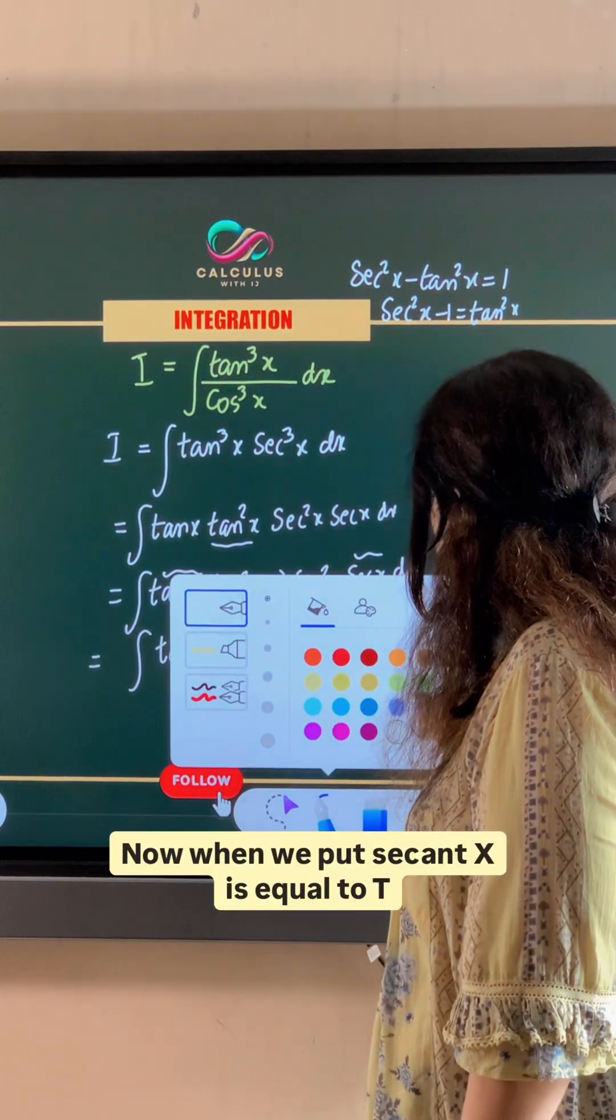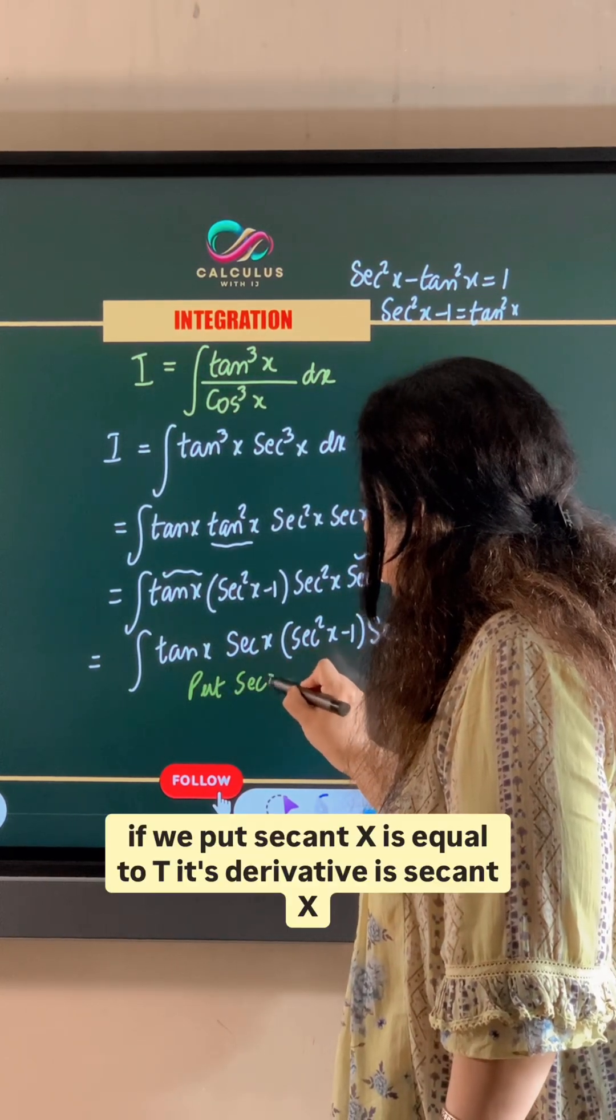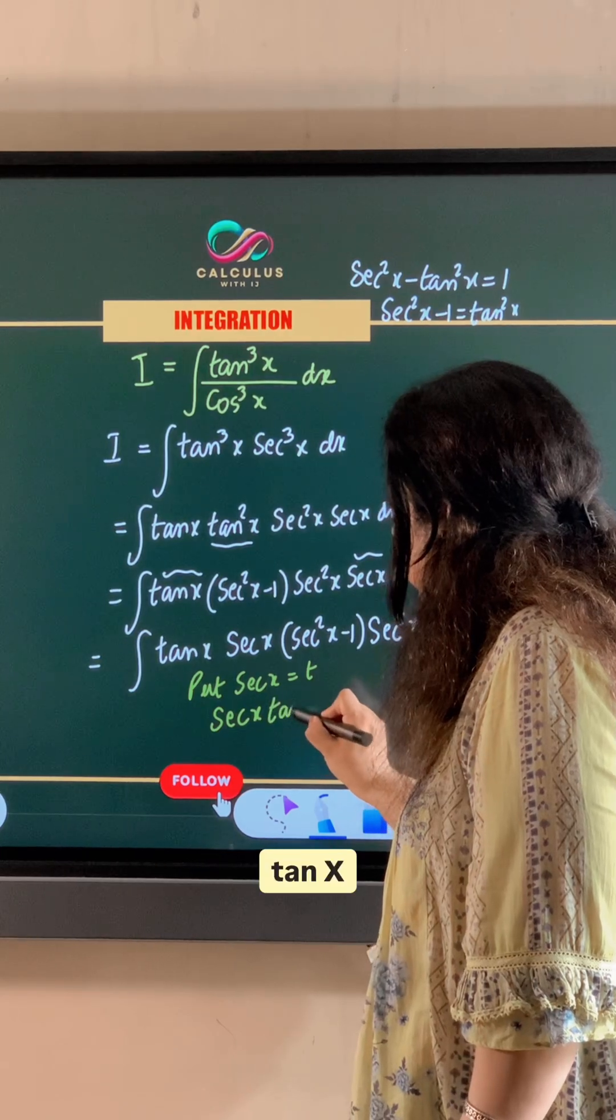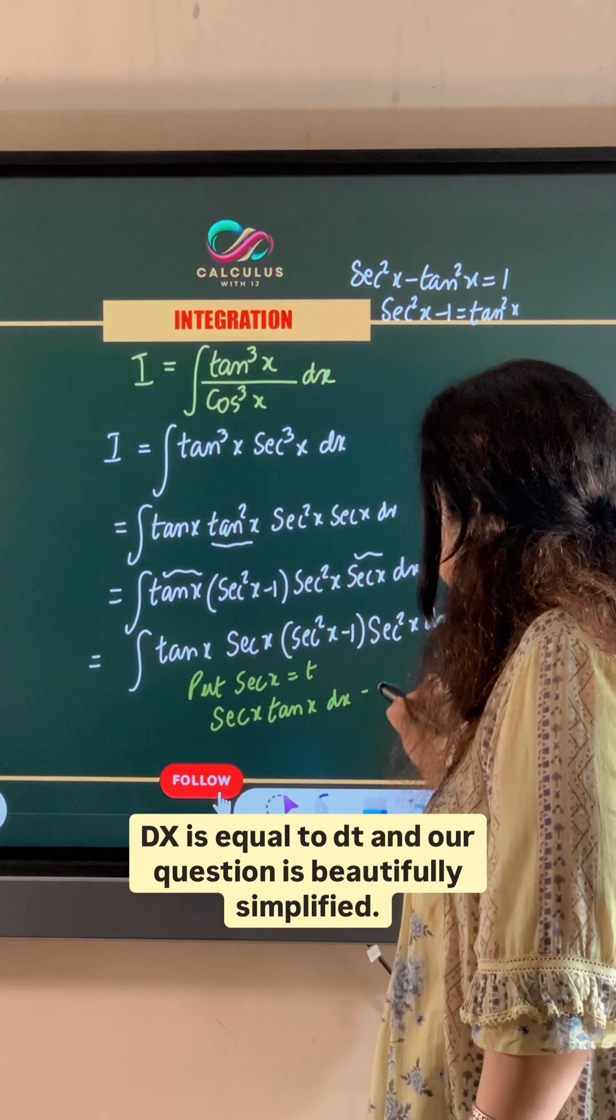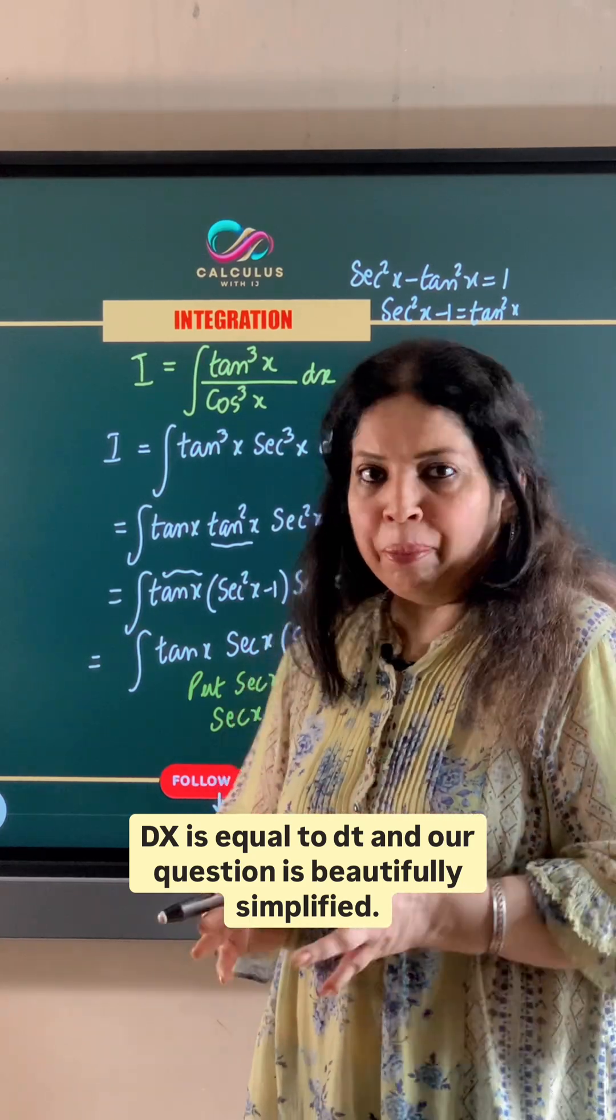So tan x into secant x and secant square x minus 1 and there is one secant square x dx. Now when we put secant x is equal to t, if we put secant x is equal to t, its derivative is secant x tan x dx is equal to dt and our question is beautifully simplified.